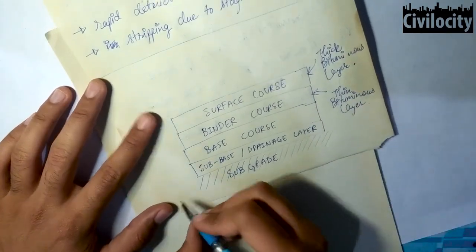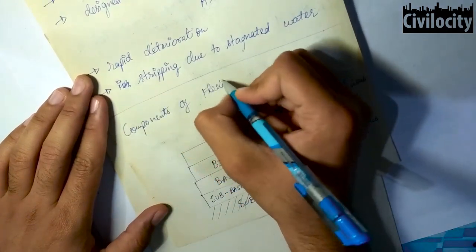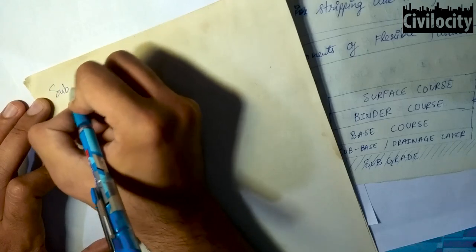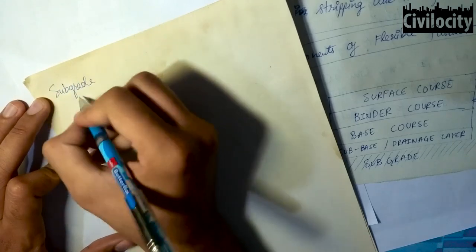And the binder course consists of thin bituminous layer, whereas the surface course consists of thick bituminous layer. Okay, let's try to know a few points about these components.